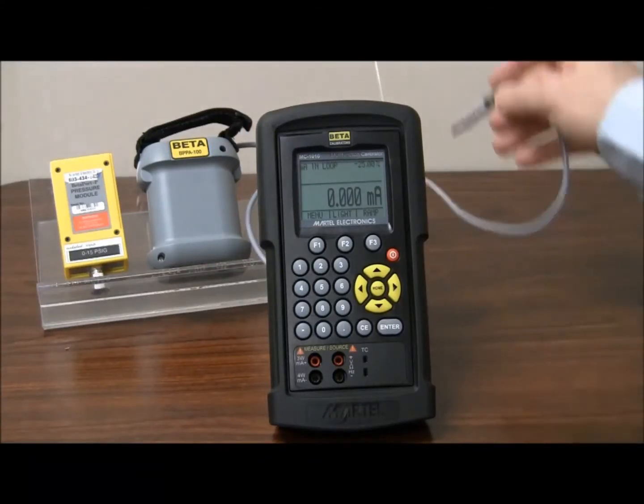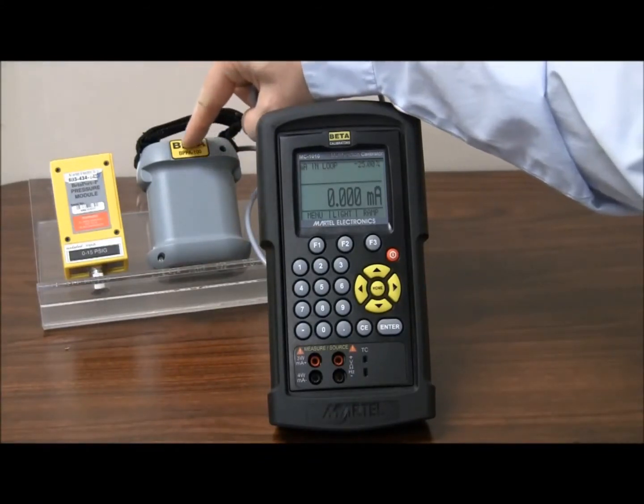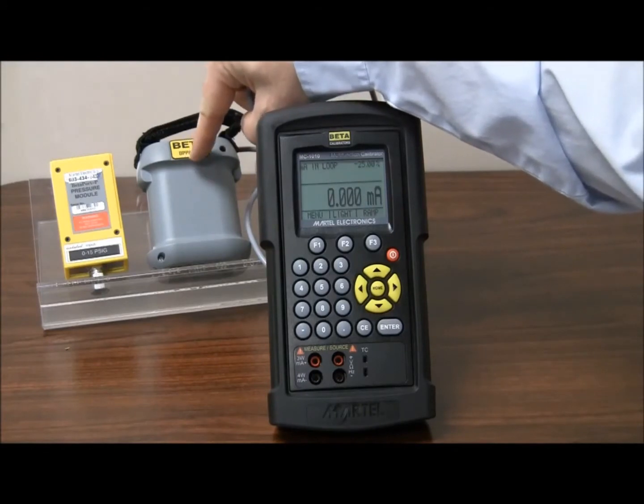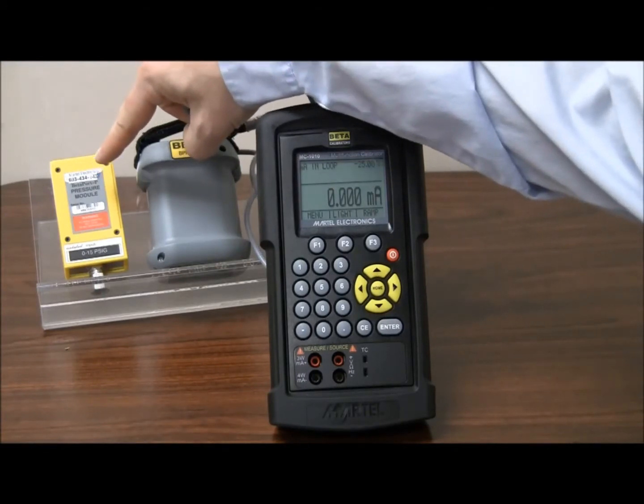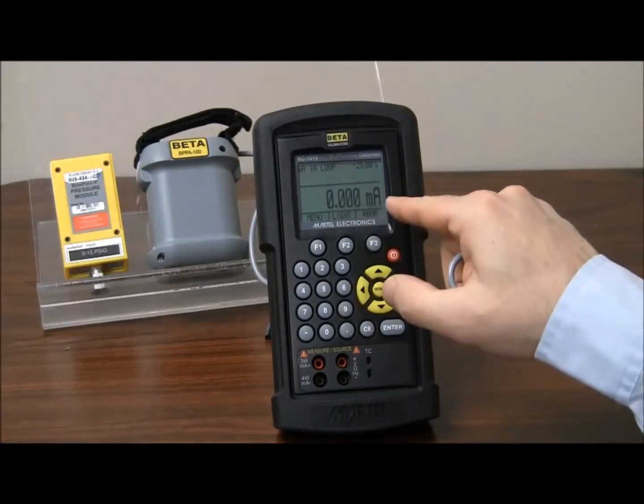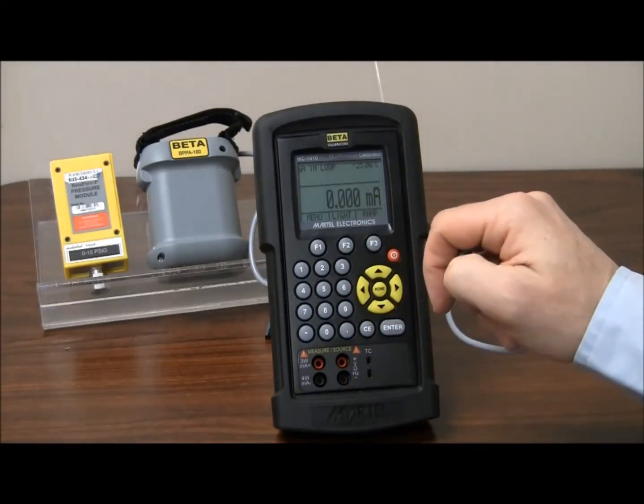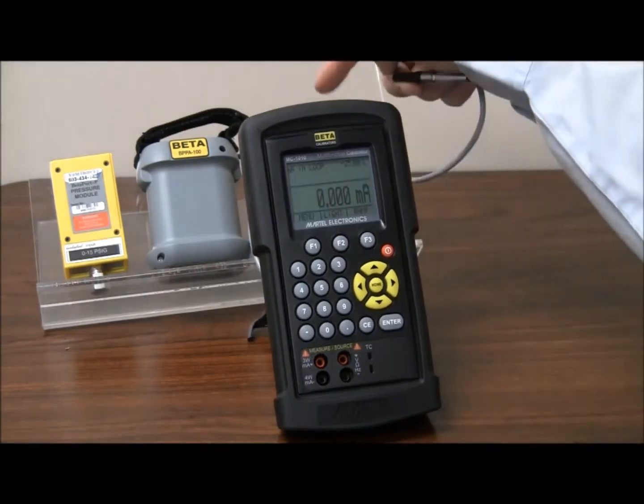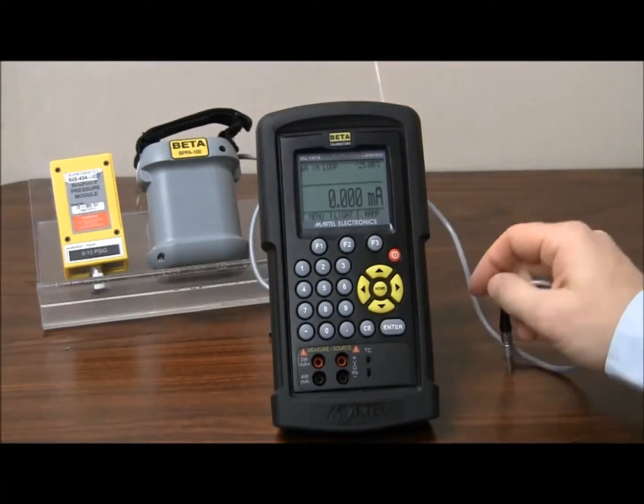As you see here, I have a BPBA 100 pressure adapter and a 15 psi pressure module. My 1010 series is currently set up to measure milliamps in. So, I'm going to cover adding an adapter and walk you through that process step by step.